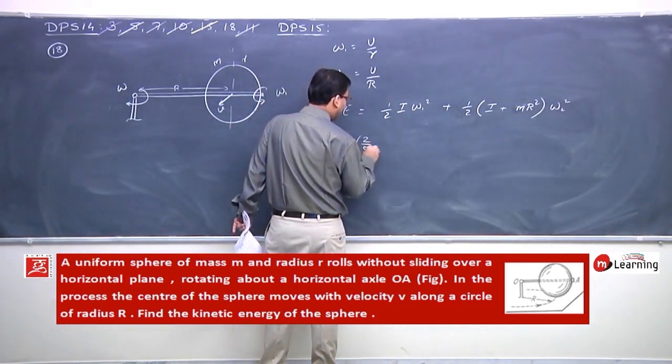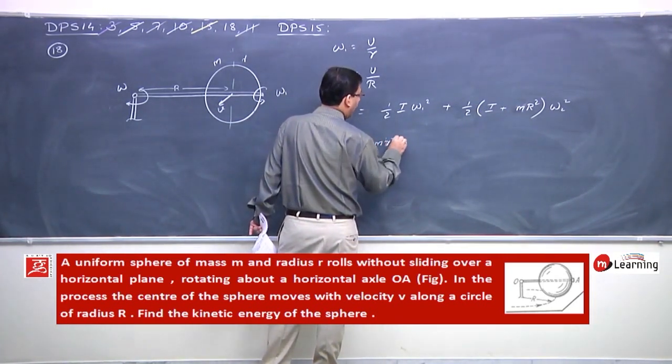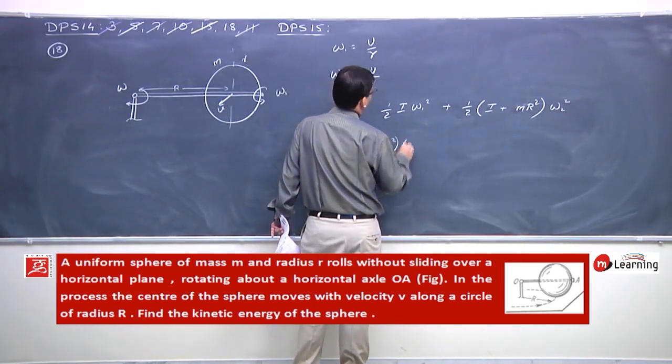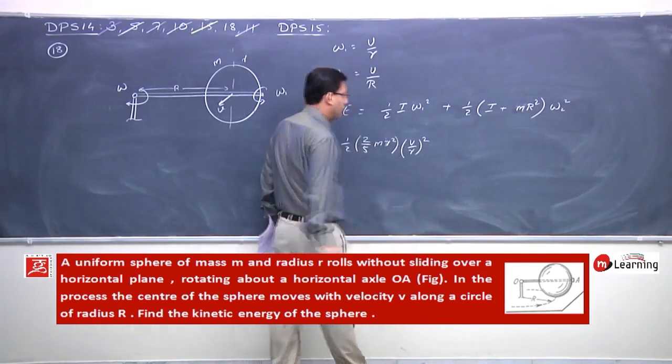Into 2 by 5 m small r square into omega 1 ki jagah v by r whole square.